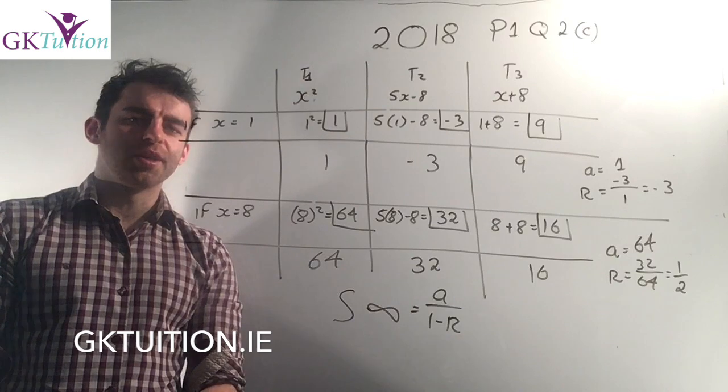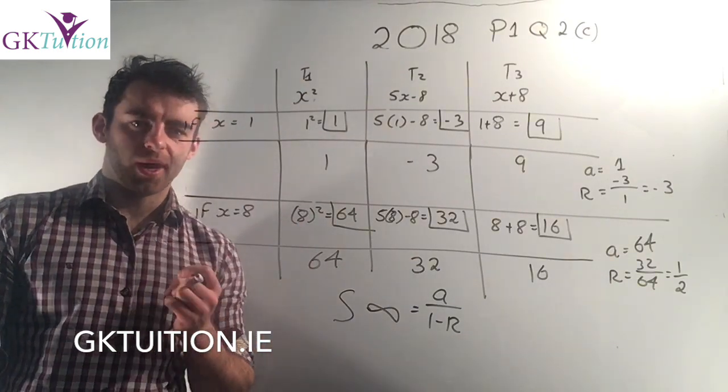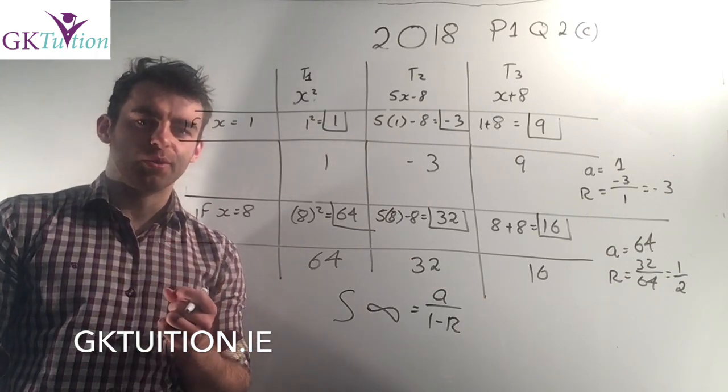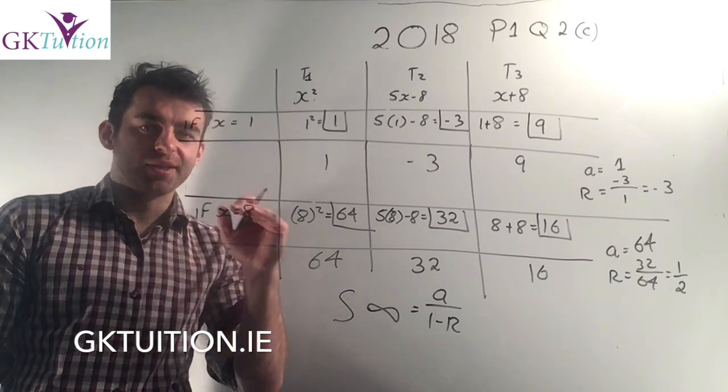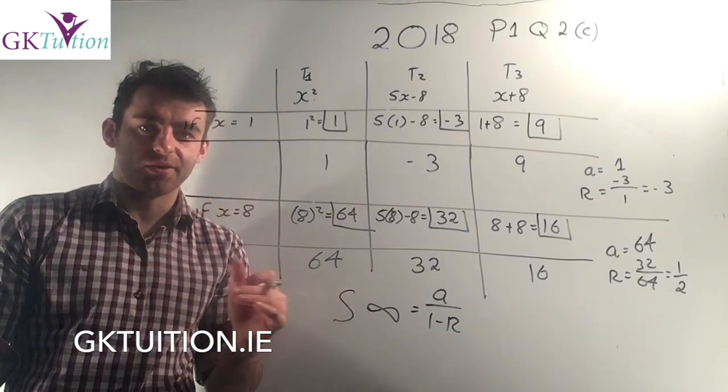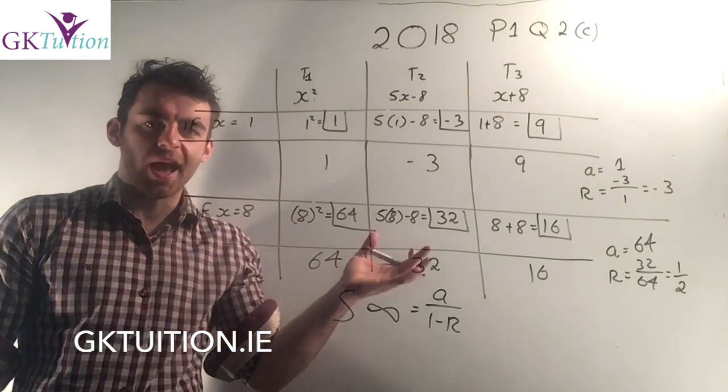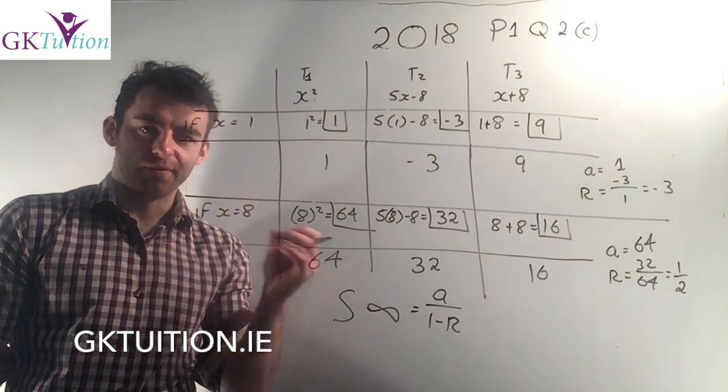Okay, for the final part of this question we're told that in the case of one of the answers from part B, the terms in part A will generate a finite sum to infinity. Finite sum to infinity basically means that it's not infinite. It means that if this sequence continued on forever and you added up all of the terms, they wouldn't add up to infinity.